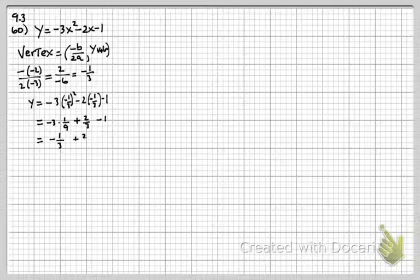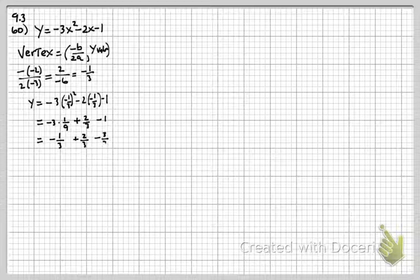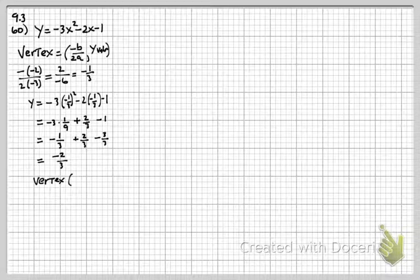So I have negative 1/3 plus 2/3, and I'll change my negative 1 into thirds by multiplying by 3 over 3, so negative 1 becomes negative 3/3. Now I can add all those fractions because they have the same denominator: negative 1 plus 2 minus 3 equals negative 2/3. So now I've got my vertex. The x-value of my vertex is negative 1/3 and the y-value is negative 2/3.